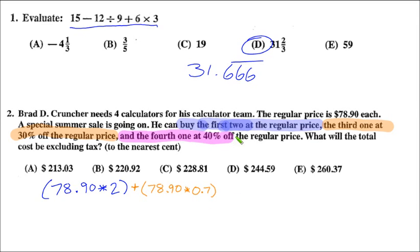Lastly, it says he buys the fourth one at 40% off. Again, we have the word off, so be very careful. This is $78.90 times 0.6. 60% is what he's paying, not 40%. It was 40% less than 100%. If you calculate all this out, you can put that into a graphing calculator, you will get 260.37, and that is E, and that is the correct answer.